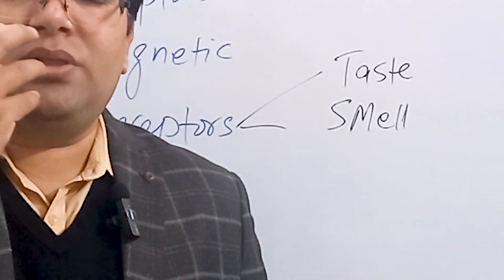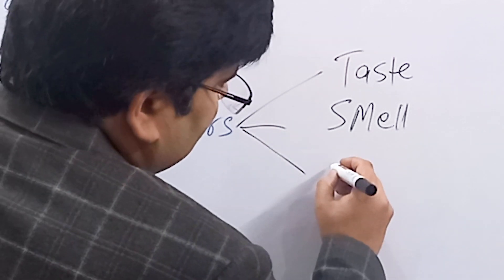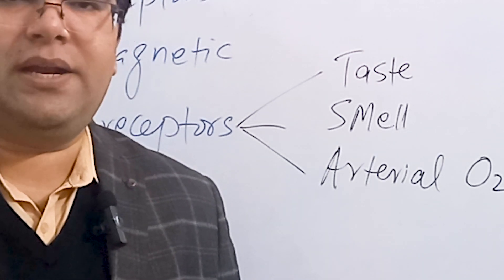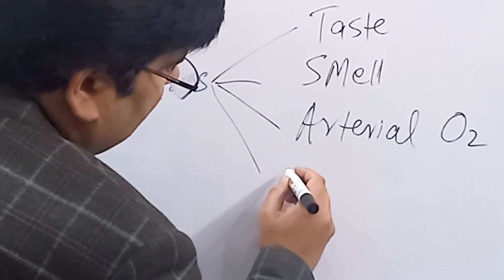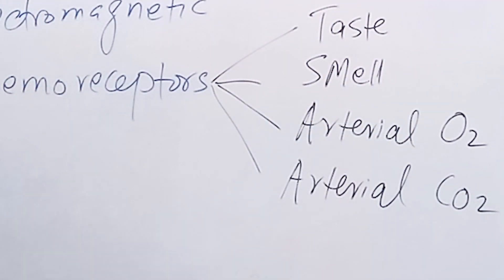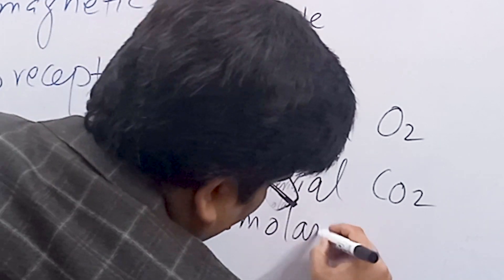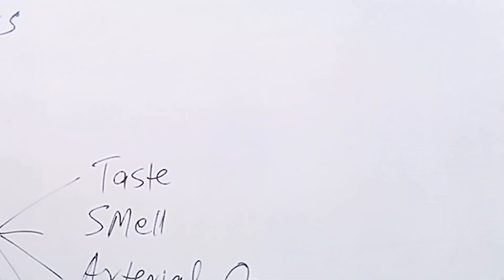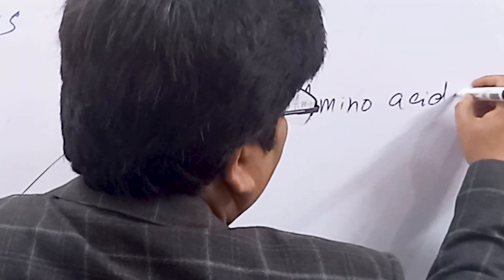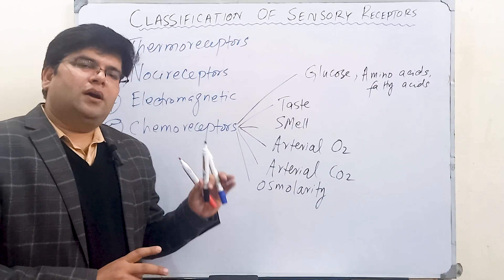We have receptors for smell present in the olfactory epithelium of our nose, detecting various odorant chemicals. Chemical receptors detect changes in arterial oxygen — present in the carotid bodies and aortic bodies — and changes in arterial carbon dioxide — present on the surface of the ventral medulla and also in the carotid and aortic bodies. We also have receptors that detect changes in osmolarity, located in the supraoptic nucleus of the hypothalamus, and receptors detecting changes in blood glucose, amino acids, and fatty acids, present in the hypothalamus.